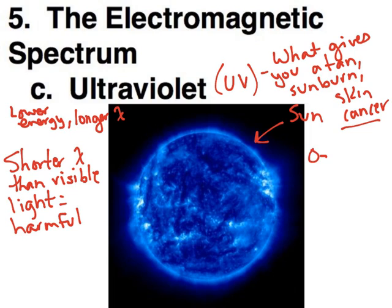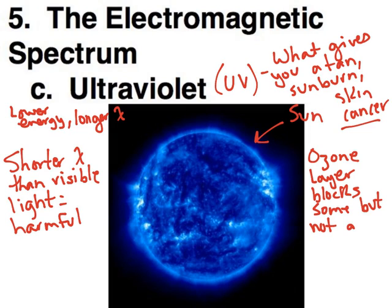Our ozone layer blocks some ultraviolet light, but not all. So wear your sunscreen. And for Pete's sake, do not use a tanning bed, because tanning beds are highly correlated with skin cancer. So those things will kill you. Don't use them.